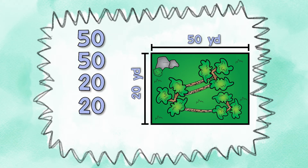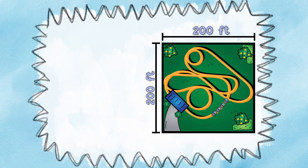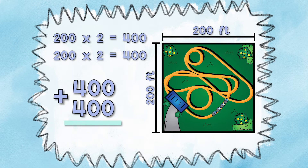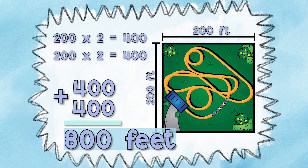The length of this zoo enclosure is 50 yards and the width is 20 yards. I'm going to add up all four sides: 50 plus 50 plus 20 plus 20 equals 140 yards. For this roller coaster, the length is 200 feet and the width is 200 feet, so I'll use the second strategy: 200 times 2 equals 400, and 200 times 2 equals 400, then add those two answers together.